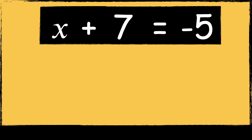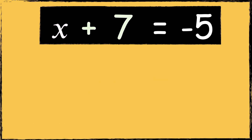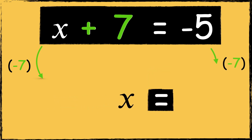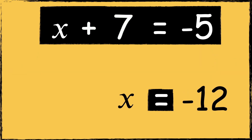Here's the last equation: X plus 7 equals minus 5. To solve this equation we need to find the value of X. First I can remove the constant term by subtracting 7, so now I'm left with X. Anything that we do to the left side we must also do to the right side, so we need to subtract 7 from minus 5. Minus 5 take away 7 is minus 12, so the solution to this equation is X equals minus 12.